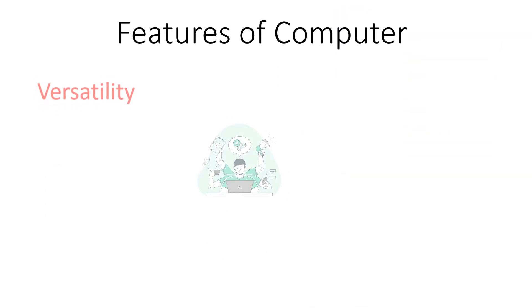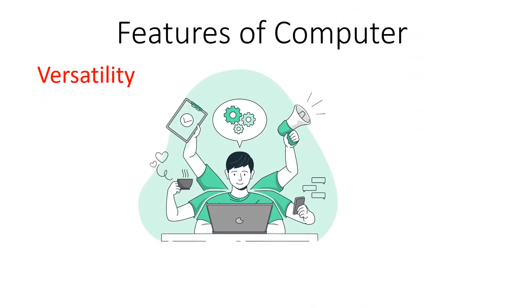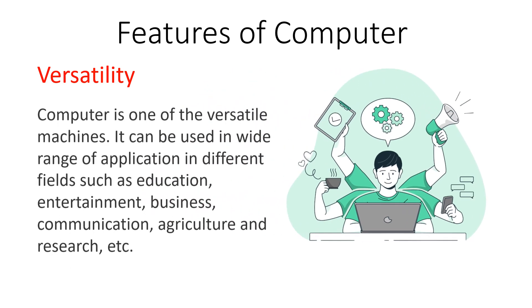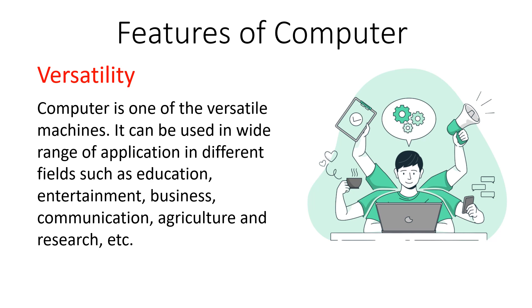The next feature is versatility. Our computer system can work in different fields, which is why it is called a versatile machine. It can be used in a wide range of applications in different fields such as education, entertainment, business, communication, agriculture, research, and so on. This capability of working in different fields makes it a versatile device.